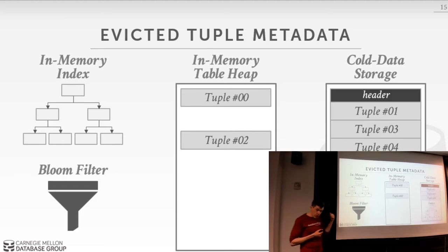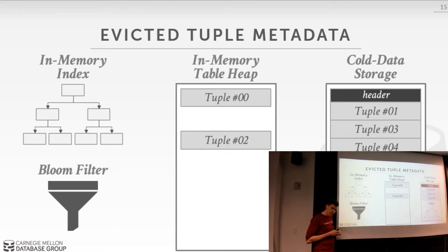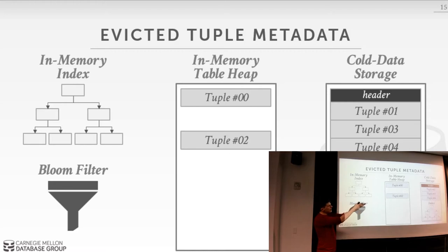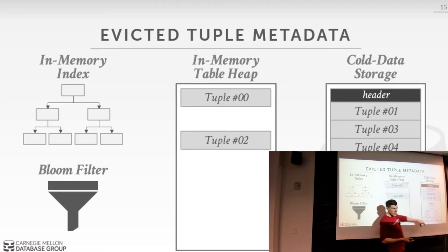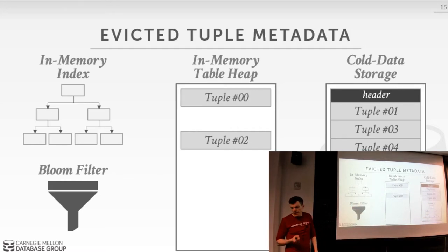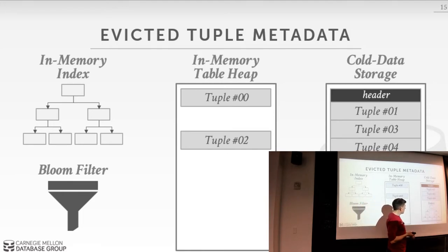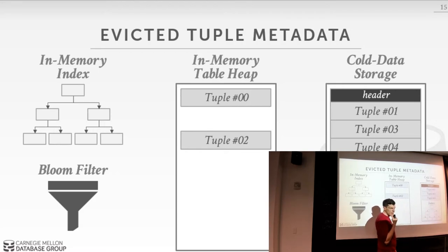Question from a student: if you use the bloom filter, you lose the offset information you'd have with tombstones, so you'd need a separate on-disk index to find the data — you can't just search the whole disk. Correct. You use the bloom filter to confirm existence, then consult the on-disk index to get the location. That on-disk index definitely has to be durable, otherwise you don't know what you'll find when you come back.